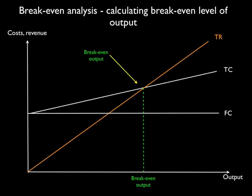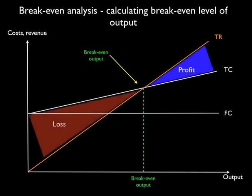to cover all of its costs. If the firm produces more than this level of output, then it's in a position where it's making a profit, whereas if it produces less than break-even level of output it's making a loss.